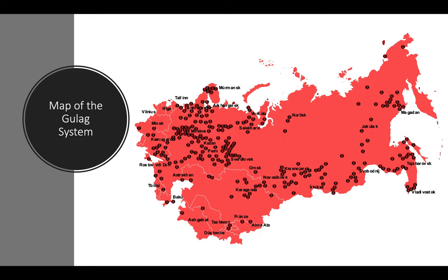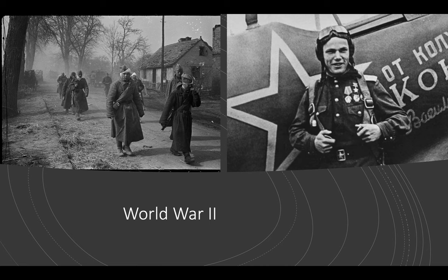And here is the map of the gulag system, which you'll also find in Canvas. Every little tiny circle is a gulag in the Soviet Union, so it's quite a lot of gulags.